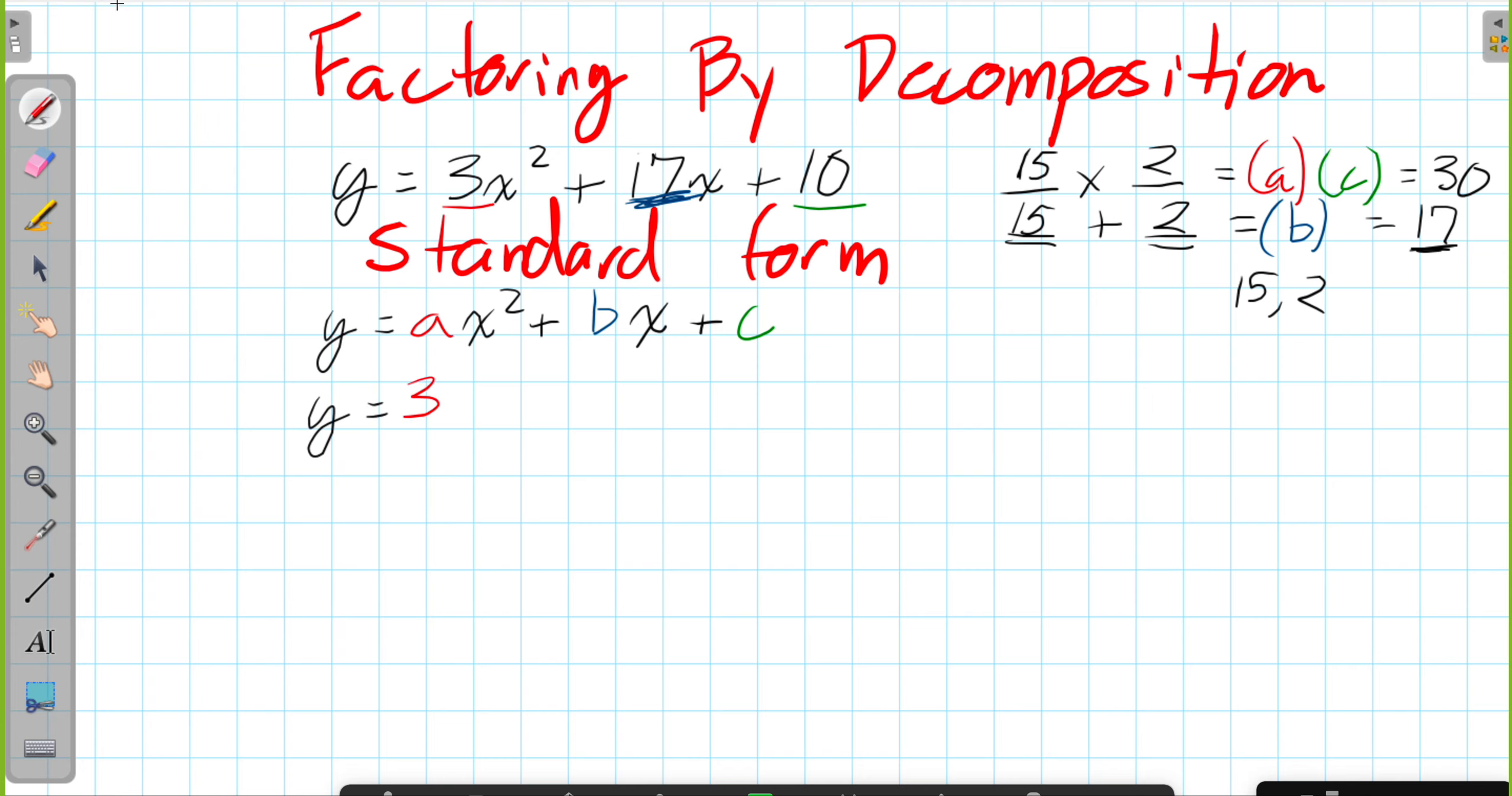The 3 was our A value, X squared. But instead of writing 17 for B, we are splitting it. And now we're splitting it into positive 15X plus 2X.